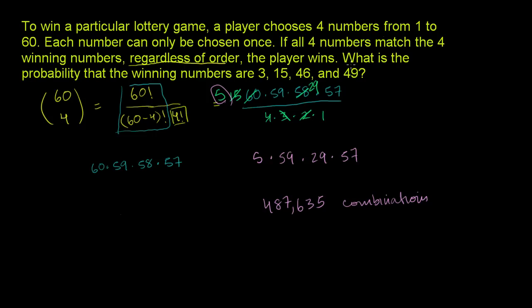Now, the question they say is what is the probability that the winning numbers are 3, 15, 46, and 49? Well, this is just one particular of the combinations. This is just one of the 487,635 possible outcomes. So the probability of 3, 15, 46, 49 winning is just equal to, well, this is just one of the outcomes out of 487,635. So that right there is your probability of winning. This is one outcome out of all of the potential outcomes or combinations when you take 60 and you choose 4 from that.